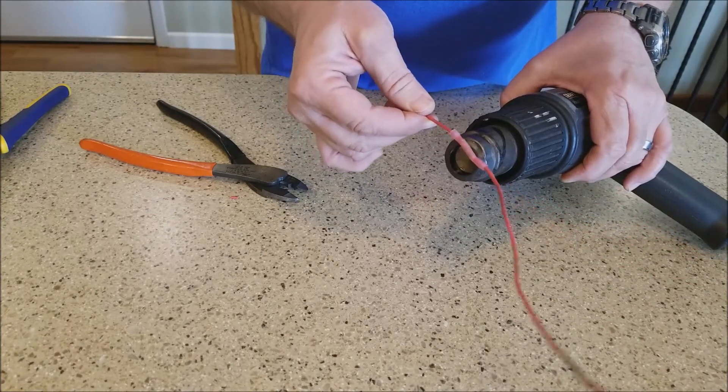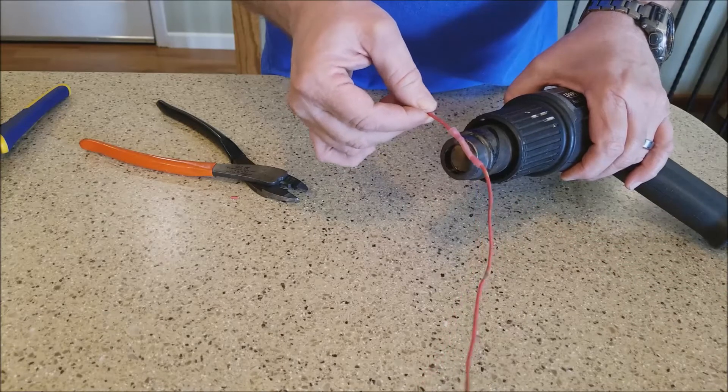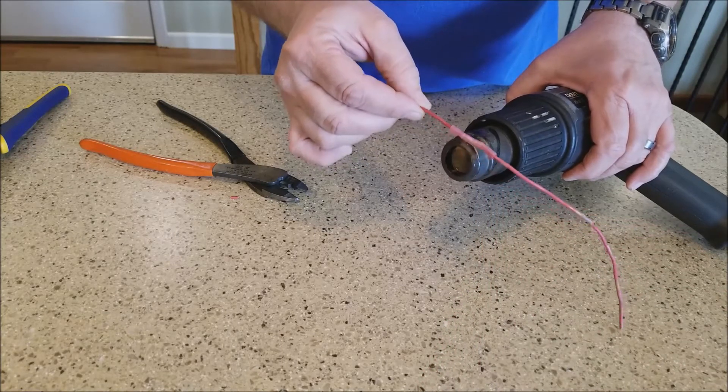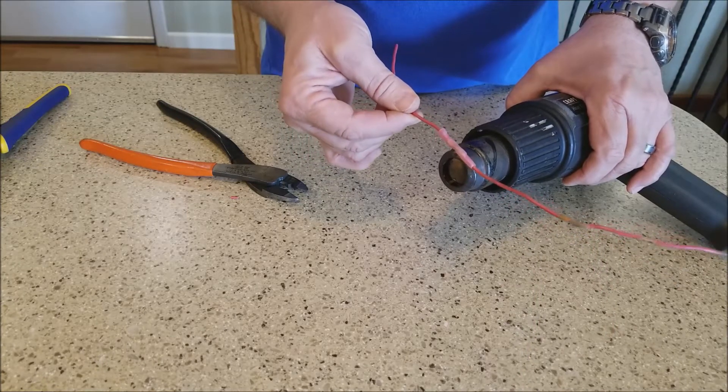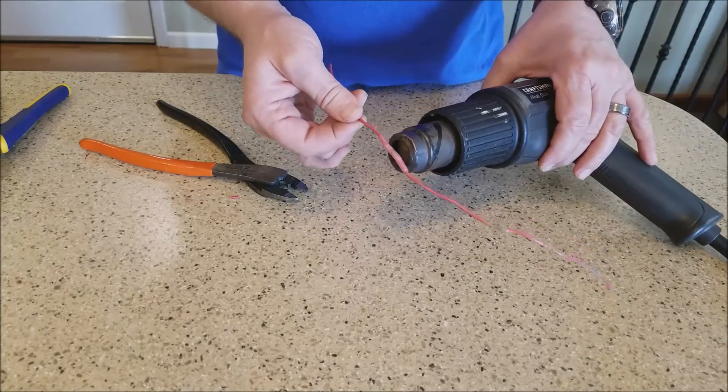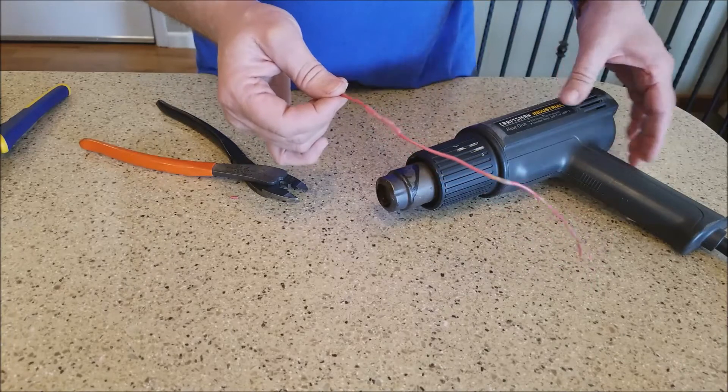What will happen is all of a sudden you'll see these shrink up. That is what you're waiting for it to do. Try not to burn the wire. Okay, once it shrinks down you can turn off the gun.